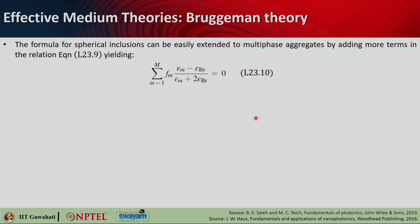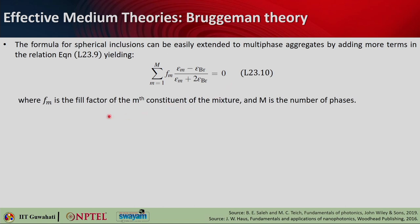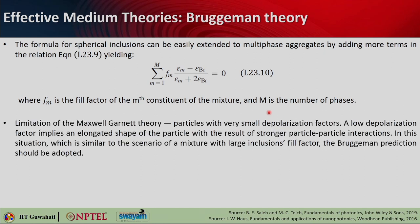If you have more than two inclusions — a multi-phase aggregate — it becomes: sum over m from 1 to M of f_m*(epsilon_m - epsilon_br)/(epsilon_m + 2*epsilon_br) = 0, where f_m is the filling factor or volume fill fraction of the m-th constituent, and there are a total of M phases.